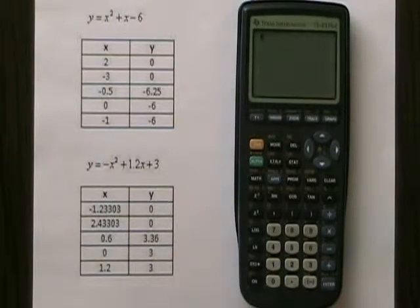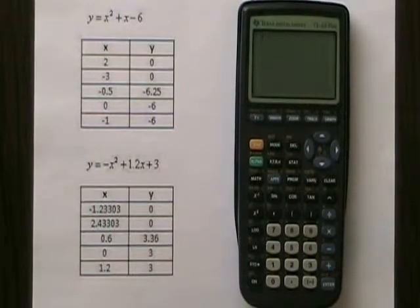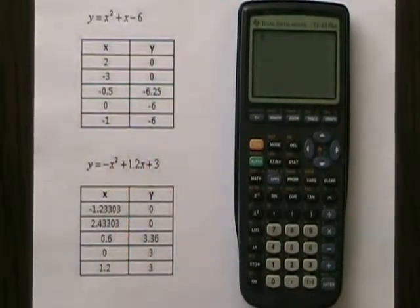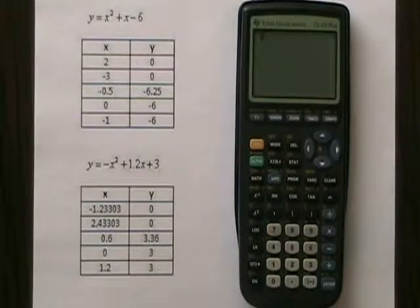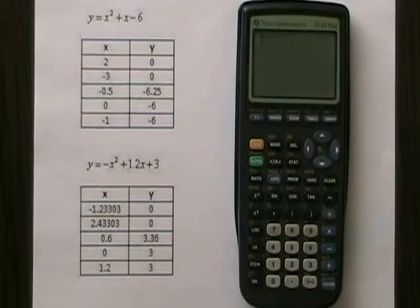The first thing we're going to do is enter the equation on the top into the graphing calculator and look at its graph. As you can see, I've already prepared a table of values that shows the five key points: the zeros, the vertex, the y-intercept, and the point symmetric to the y-intercept, also known as the mirror point.